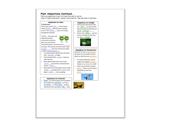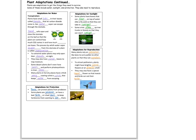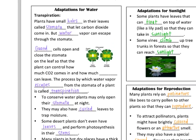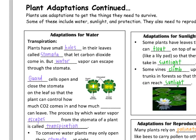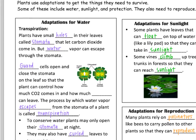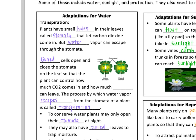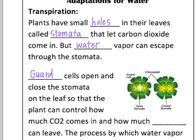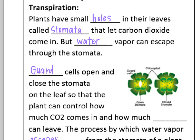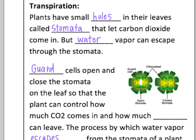Now let's look at some specific adaptations for the things that plants need most: water, sunlight, protection, and reproduction. Starting with water — before looking at adaptations, you need to know a little bit about transpiration. Plants have tiny holes in their leaves called stomata. You can see a picture here showing stomata that are closed and one that is open. Through those holes, plants get carbon dioxide needed for photosynthesis, but water can also escape.